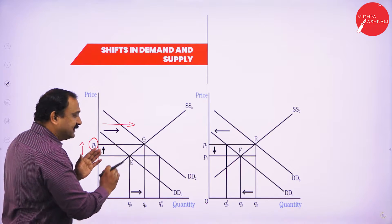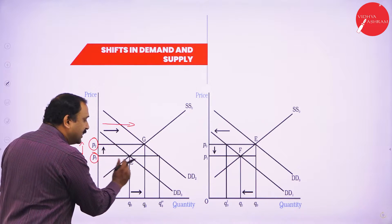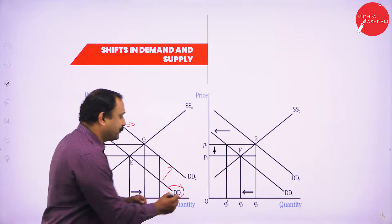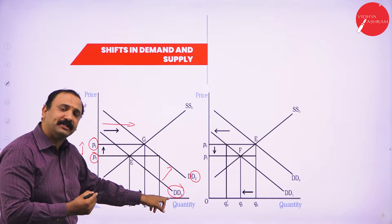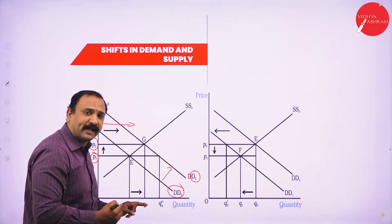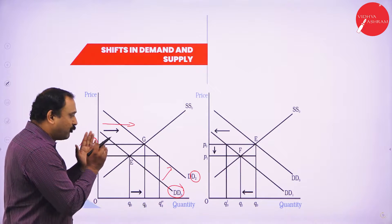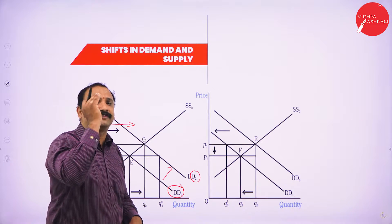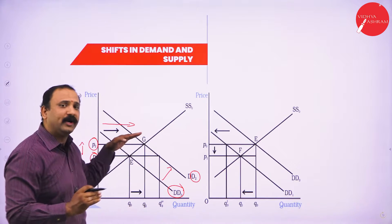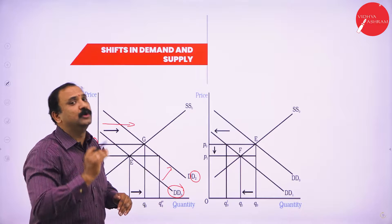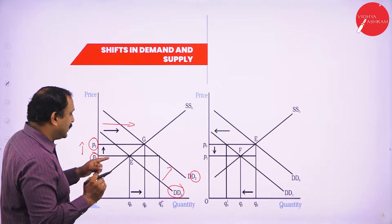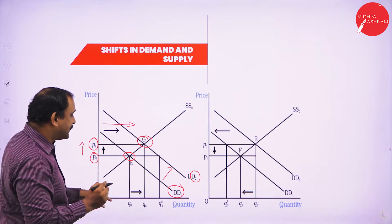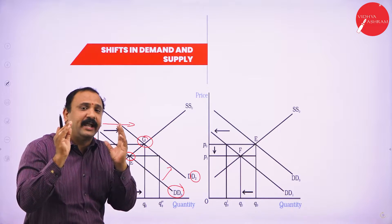The demand will also increase. Initially the demand curve is at D0; it makes a rightward movement and moves to a position called D2. There is an increase in price, so it moves to D2. So in the first graph, what we are seeing is that an increase in price is making both the supply and demand curves move rightwards. They both meet at two equilibrium points — point E and point G — which are the points where equilibrium is attained in the market.